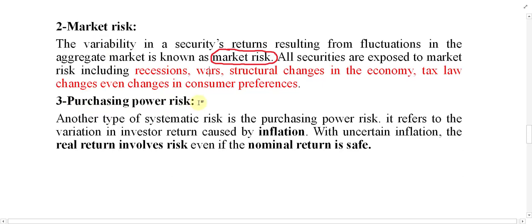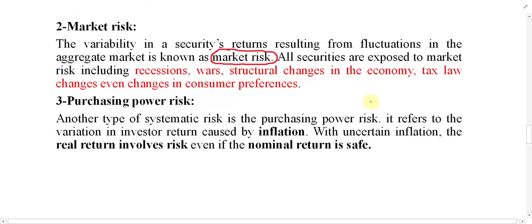The next one is purchasing power risk. What do we mean by purchasing power? Purchasing power simply means the power of money. If money can purchase more commodities, the purchasing power of money is more; if money can purchase less commodity, the purchasing power of money is less. For example, last year we could purchase 1 kg of apple with 100 Afghani, but this year we have to pay 150 Afghani to purchase 1 kg of apple. In this case, the purchasing power of money has decreased.